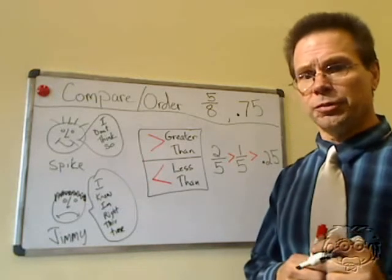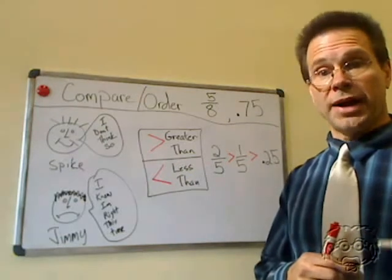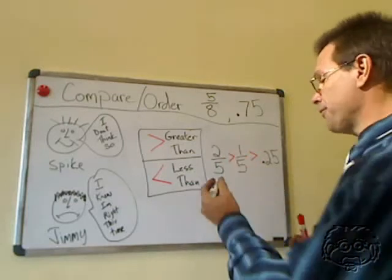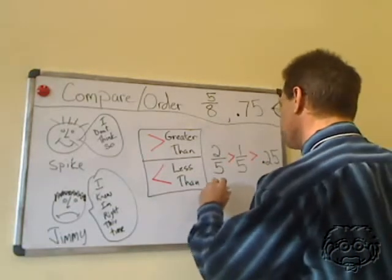So how do we convert a fraction to a decimal? Right. We divide the numerator by the denominator. So two-fifths, two divided by five, is 0.4.